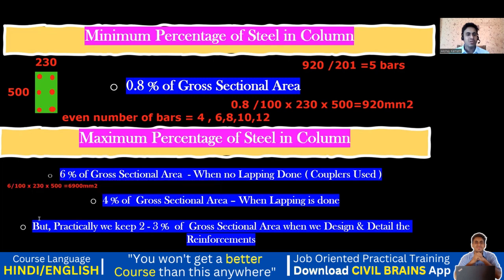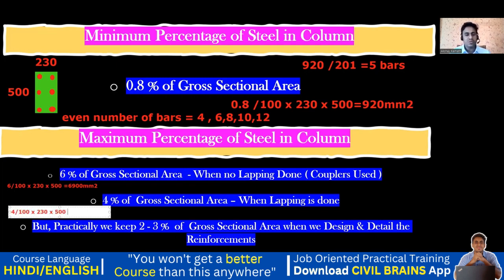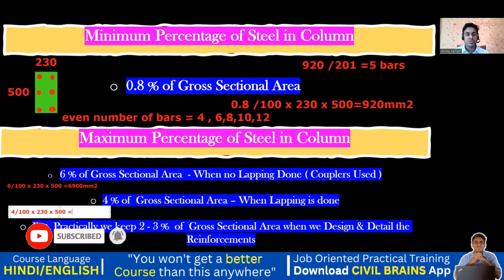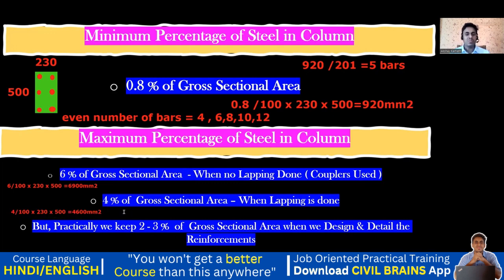For 4 percent with lapping: 4 ÷ 100 × 230 × 500 = 4,600 mm². Again, this is only a code book value and practically we don't go there. In practice, we use 2 to 3 percent.